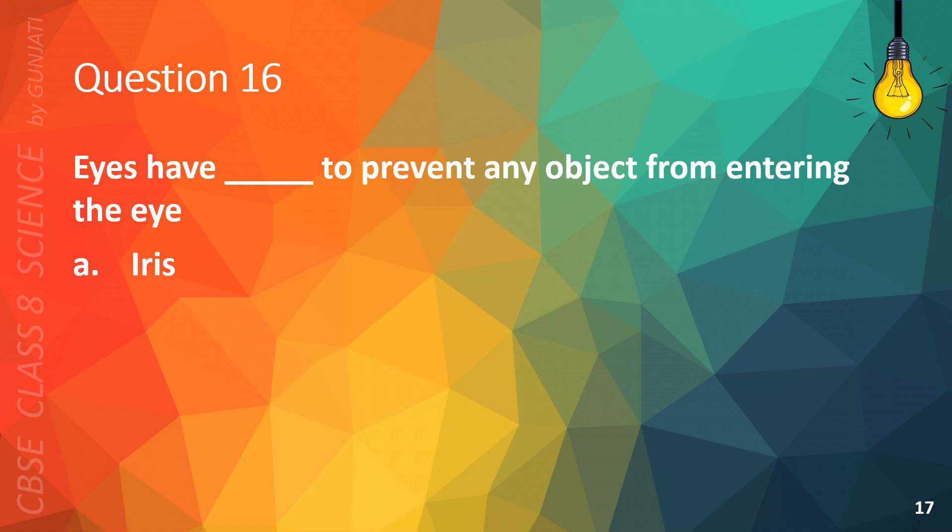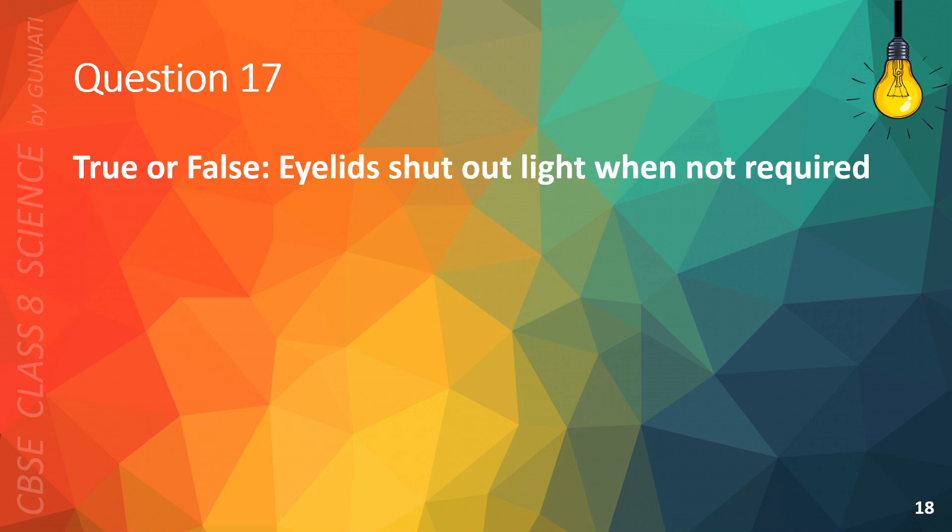Question 16. Eyes have blank to prevent any object from entering the eye. A. Iris, B. Optic nerve, C. Eyelids, or D. ciliary muscle. The correct answer is C, Eyelids.